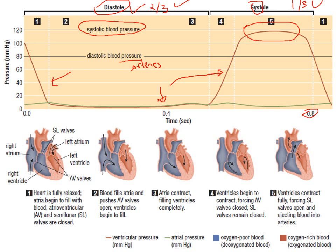When you feel your pulse, you're feeling pressure in your arteries. When your ventricles are contracting, that arterial pressure is called systolic blood pressure. When your heart relaxes, the pressure felt in your arteries is the diastolic blood pressure. Blood pressure is reported as two numbers: the top number is when your heart is squeezing and the bottom is when it's relaxing.